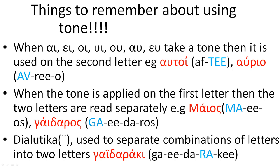However, when the tone is applied on the first letter of a combination, then that combination is read separately. For example, the word maios, which means May — normally you would read alpha upsilon as e, like the sound of epsilon, and you would say meos. But because the first letter alpha has a tone, you read alpha upsilon as two different letters, so the word is pronounced maios instead of meos. The same with the word gaidaros, which means donkey — instead of saying yedaros, you say gaidaros.